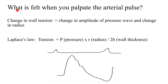What is felt when you palpate the arterial pulse? A change in the wall tension of the artery is what leads you to palpate the pulse. What governs this wall tension change is the change in the amplitude of the pressure wave — that is, the force with which the vessel hits your palpating finger — and also a change in the radius of that artery. All these changes are governed by Laplace's law, in which the tension of the wall in the artery is equal to pressure multiplied by radius, divided by wall thickness. So when there is a change in the pressure and also the radius of the artery between systole and diastole, that is when a change in tension is appreciated and hence you are able to palpate that artery.